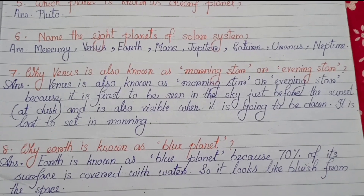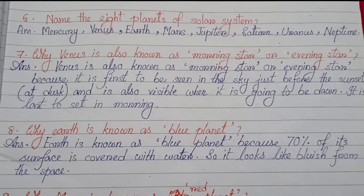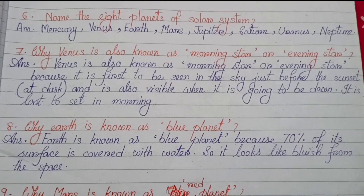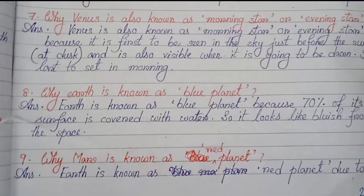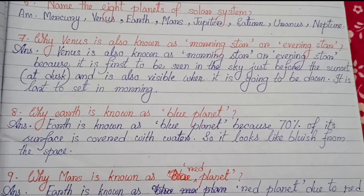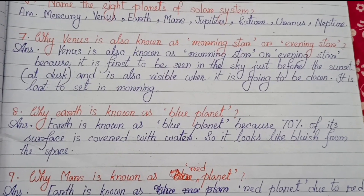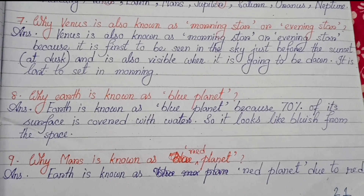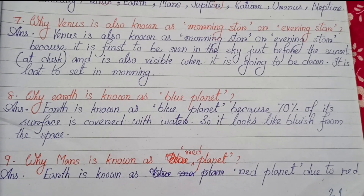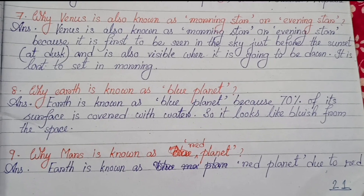Venus is also visible when it is going to be dawn — it is the last to set in the morning. Number eight: Why is earth known as the blue planet? Earth is known as the blue planet because 70 percent of its surface is covered with water, so it looks bluish from space.